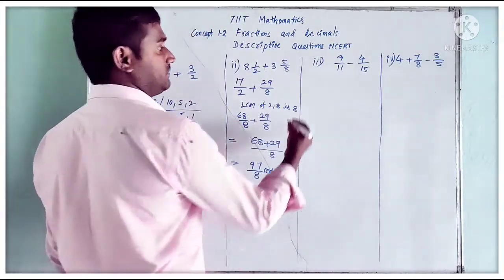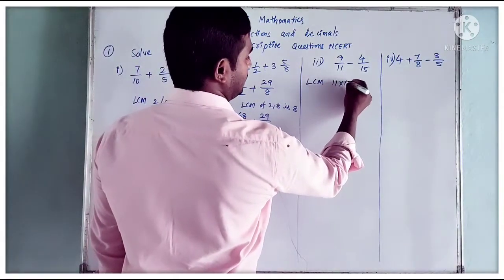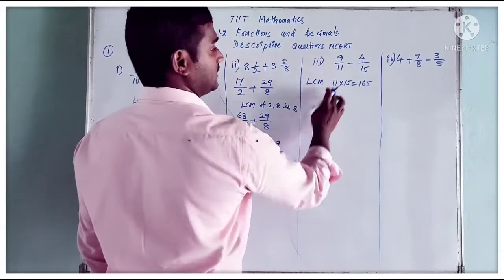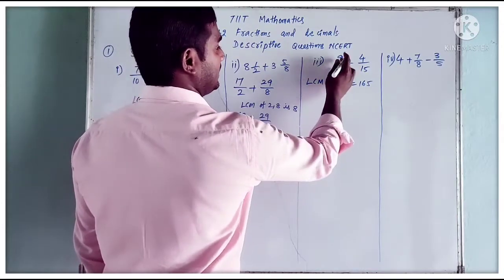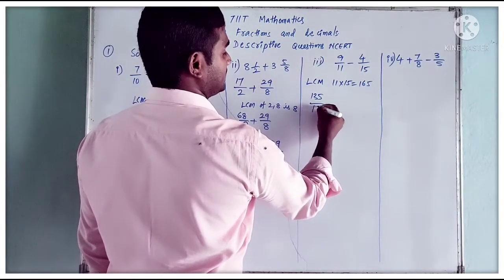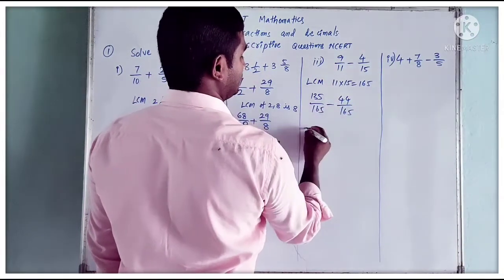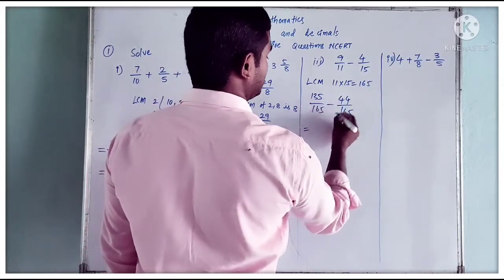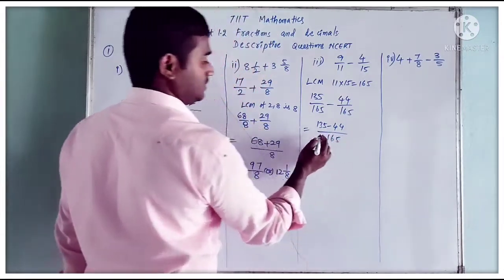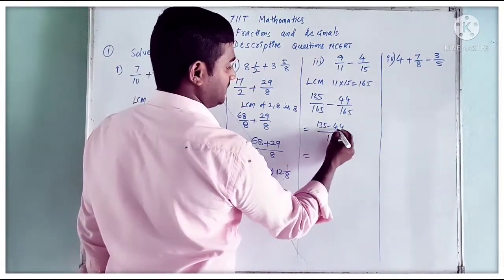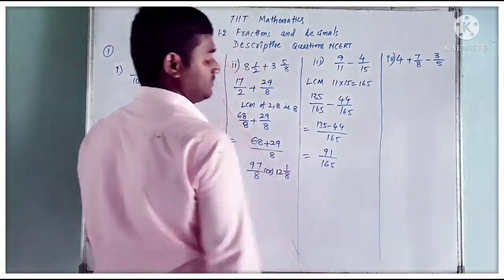Next question: 9 by 11 minus 4 by 15. Here also we have different denominators. LCM of 11 and 15 equals 165. To get 165: multiply 9 by 15 to get 135 by 165, and multiply 4 by 11 to get 44 by 165. Subtracting: 135 minus 44 by 165, which equals 91 by 165.